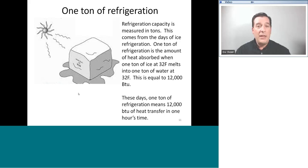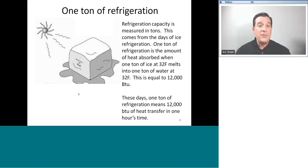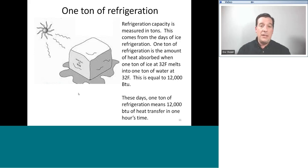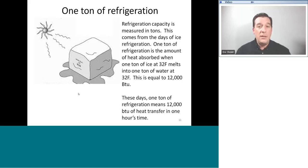In commercial applications, they don't necessarily say 'three ton' or 'five ton' in the model numbers. They'll have a number that indicates thousands of BTU per hour. For example, if a commercial unit has 240 in the model number, that means 240,000 BTU per hour — that would be a 20-ton air conditioner. That's how the whole ton thing works. It's based on ice refrigeration, and modern-day refrigeration seeks to duplicate the exact same process.